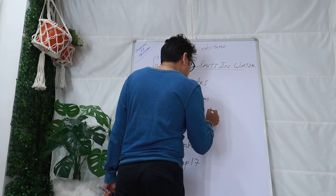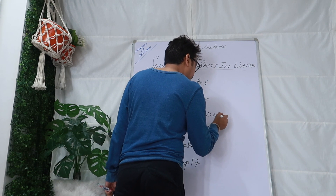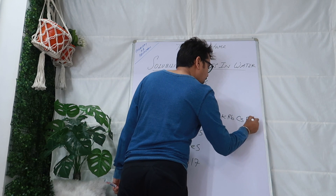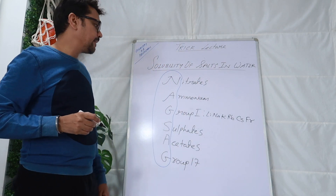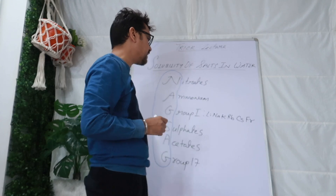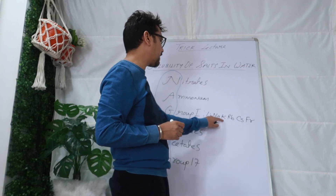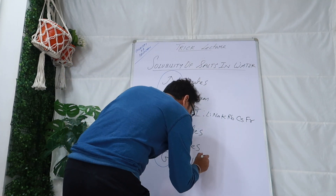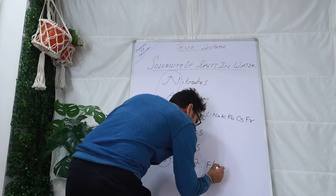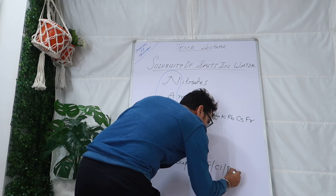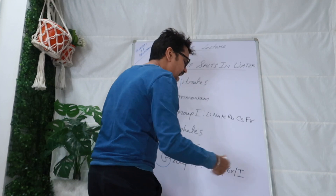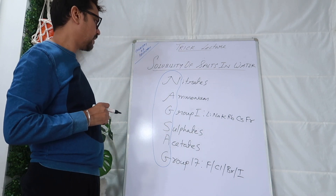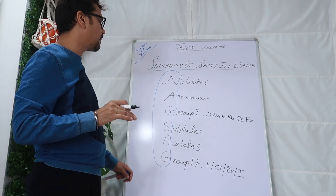What is group 1? Group 1 is Leena K Arbicis Farah — lithium, sodium, potassium, rubidium, cesium and francium. If I am talking about group 17, they are the halogens. The mnemonic is: First Class Biryani I Ate — giving us fluorine, chlorine, bromine, iodine. And all salts of these group 17 elements are soluble in water.